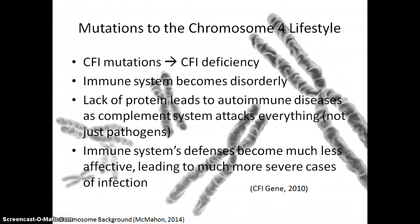Similarly, CF1 mutations result in CF1 deficiency, meaning the immune system becomes disorderly. A lack of this protein leads to autoimmune diseases, as the complement system attacks everything — not just bacterial and viral pathogens. Therefore, the immune system's defenses become much less effective, leading to much more severe cases of infection.